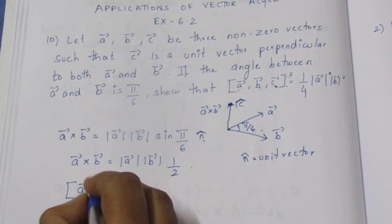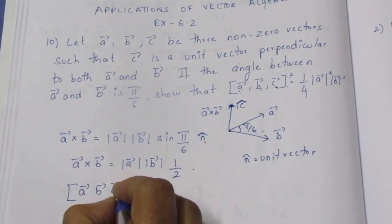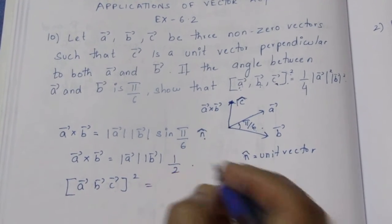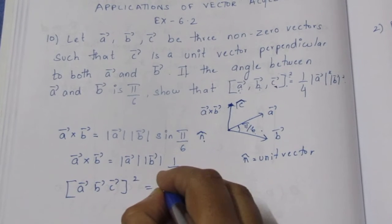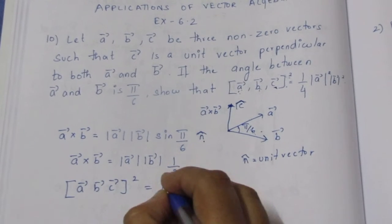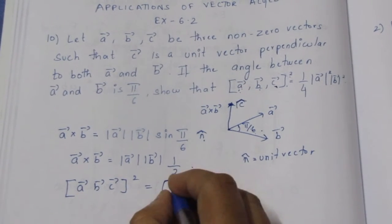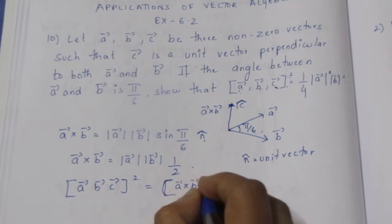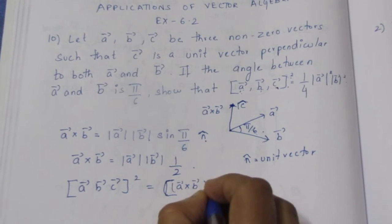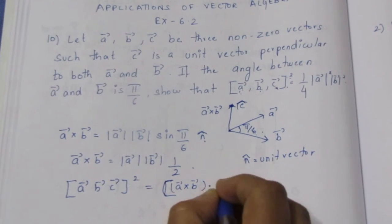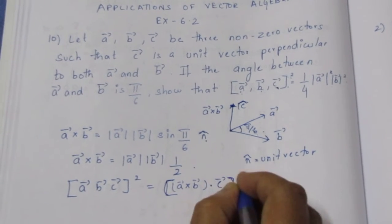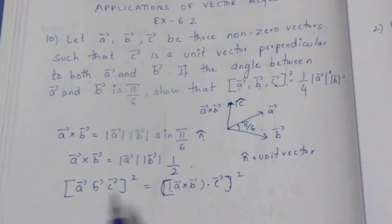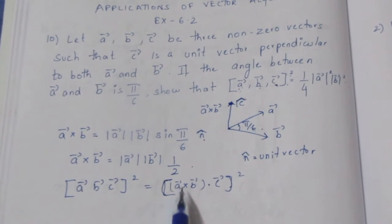The scalar triple product of a vector, b vector, c vector can be written as: a vector cross b vector, dot c vector. We can write the scalar triple product using first two vectors as cross product, dotted with the last vector.